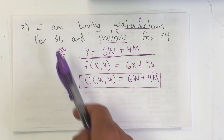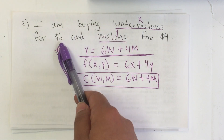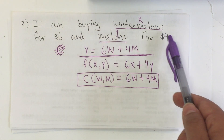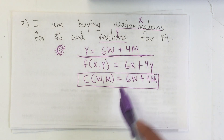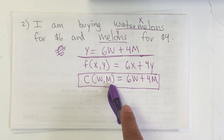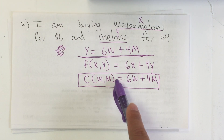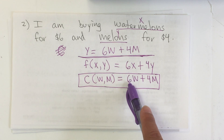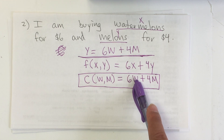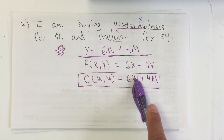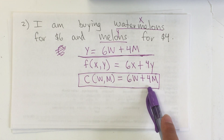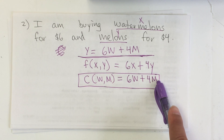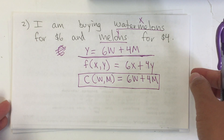I am buying watermelons for six dollars and melons for four dollars, so my cost for watermelons and melons equals six multiplied by the number of watermelons plus four multiplied by the number of melons.